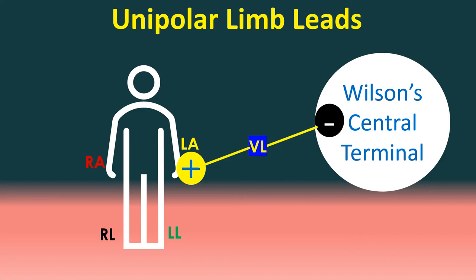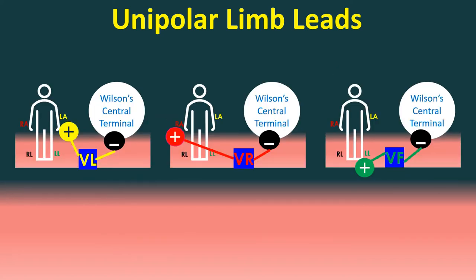Unipolar recordings are obtained by taking the limb electrode as positive and the central terminal as negative. Unipolar limb leads are called VR, VL, and VF depending on whether the positive electrode is at the right arm, left arm, or left leg.